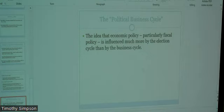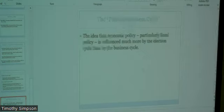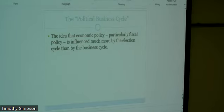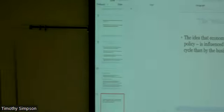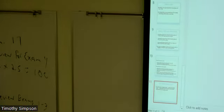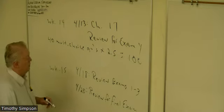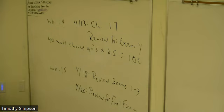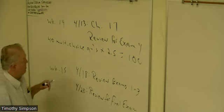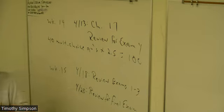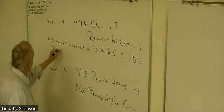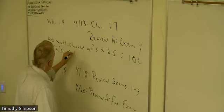So it's 40 multiple choice questions in Brightspace. It'll be available sometime today or tonight. It covers chapters 15, 16, and 17. Chapter 15 deals with monetary policy and bank regulation. Chapter 16 is international trade. Chapter 17 deals with fiscal policy. Only three chapters covered.